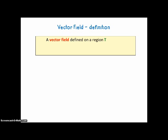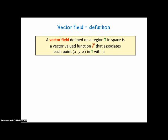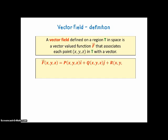Vector field definition. A vector field defined on a region T in space is a vector-valued function F that associates each point (x, y, z) in T with a vector: F(x,y,z) = P(x,y,z)i + Q(x,y,z)j + R(x,y,z)k. In shorthand, we can leave out the i, j, k and even the xyz.